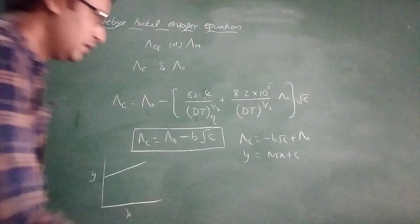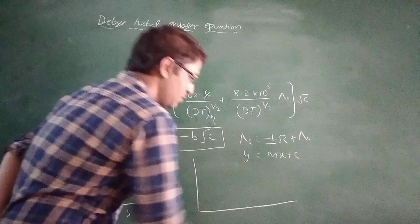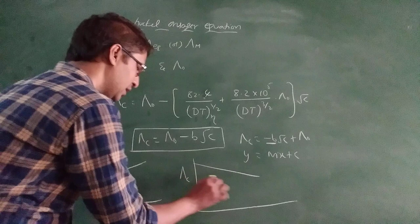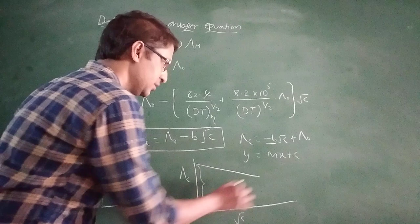Here the m value is minus B because it's a straight line with negative slope. The graph is drawn between lambda C and root C. What is the intercept here? The intercept is nothing but lambda 0 and the slope is minus B.